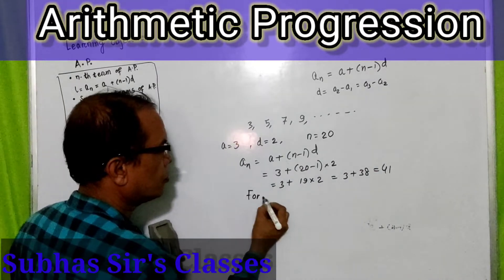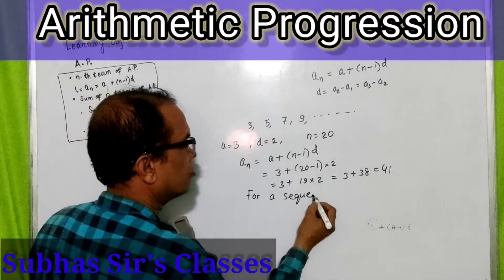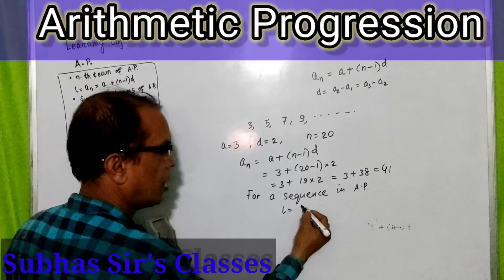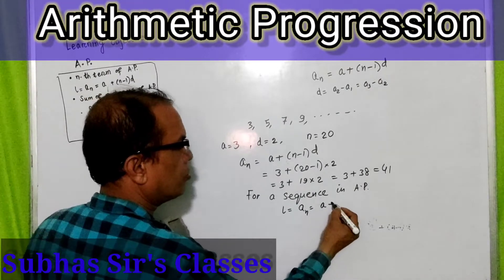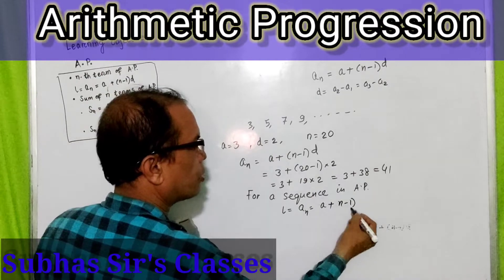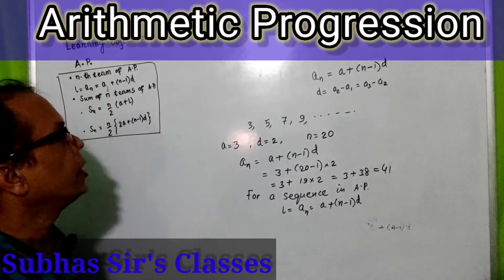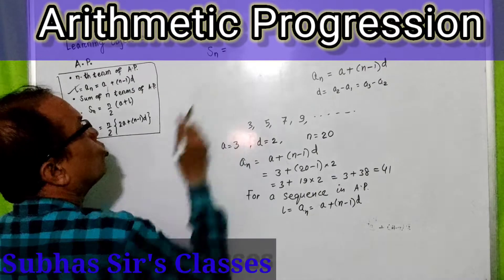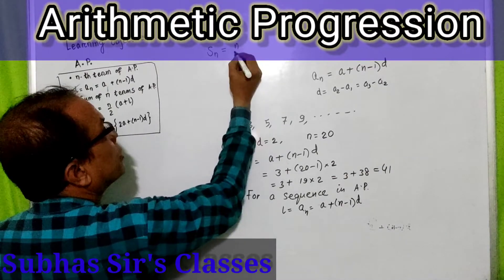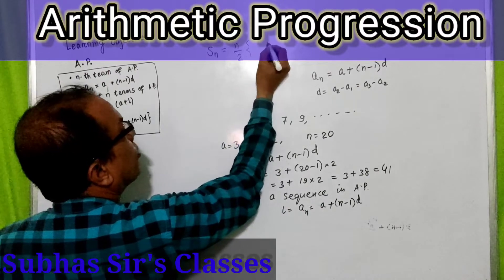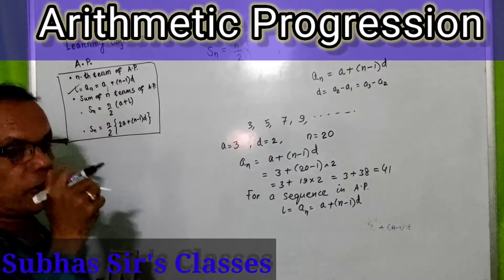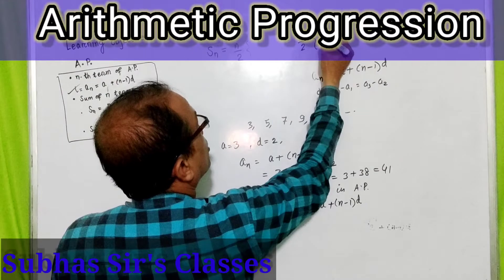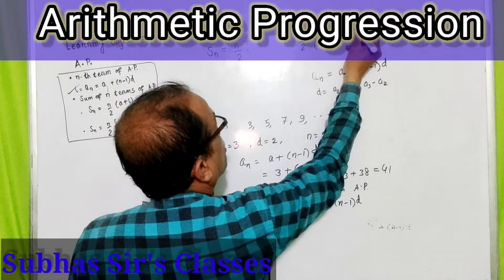For an arithmetic progression, the last term or nth term equals the first term plus (number of terms minus 1) into the common difference d. Now let us look at the second formula, which is for the sum of n terms. It is expressed in two ways: n/2 into (a + l), the most common method used in India, and n/2 into (2a + (n−1)d), the western method.